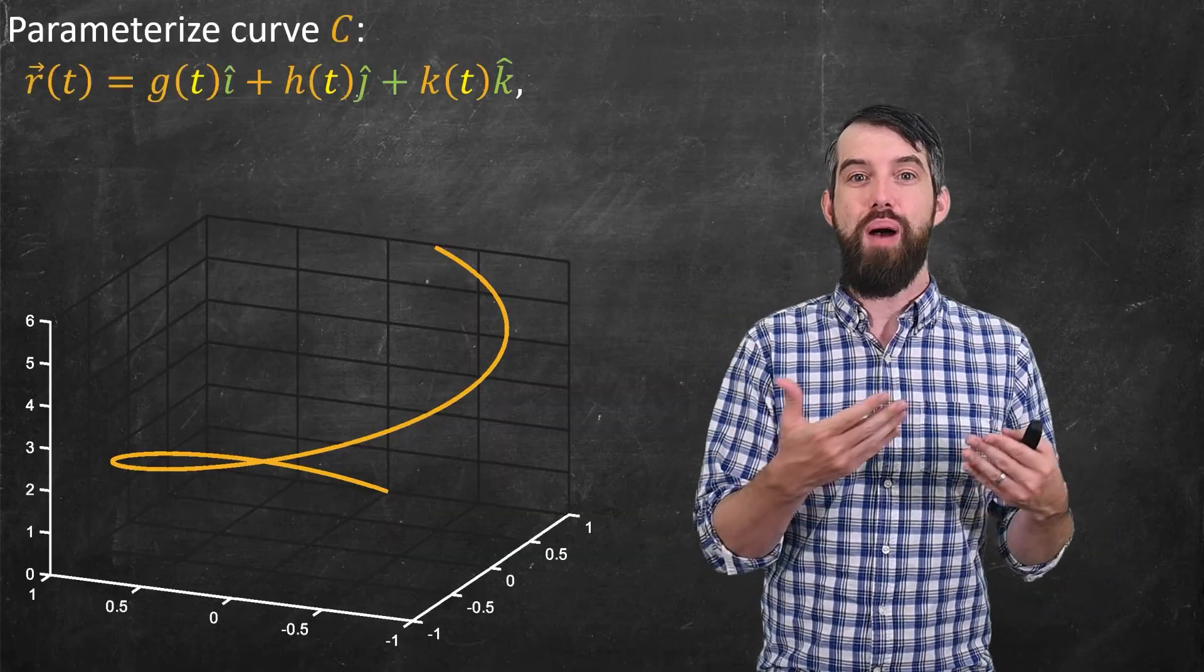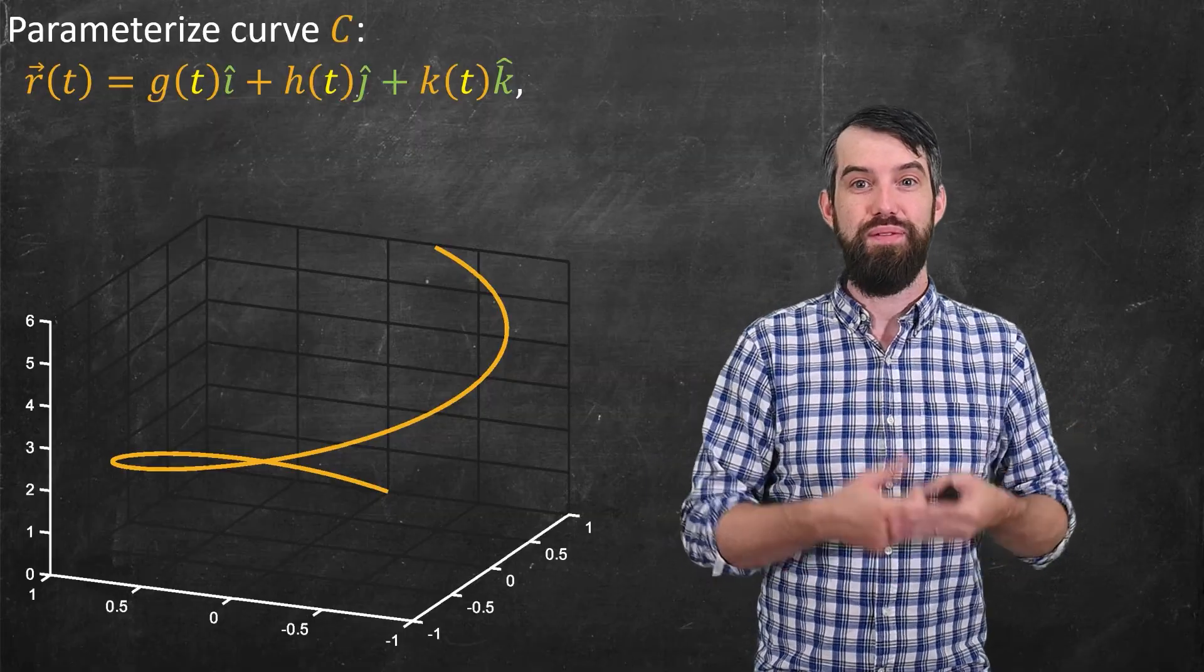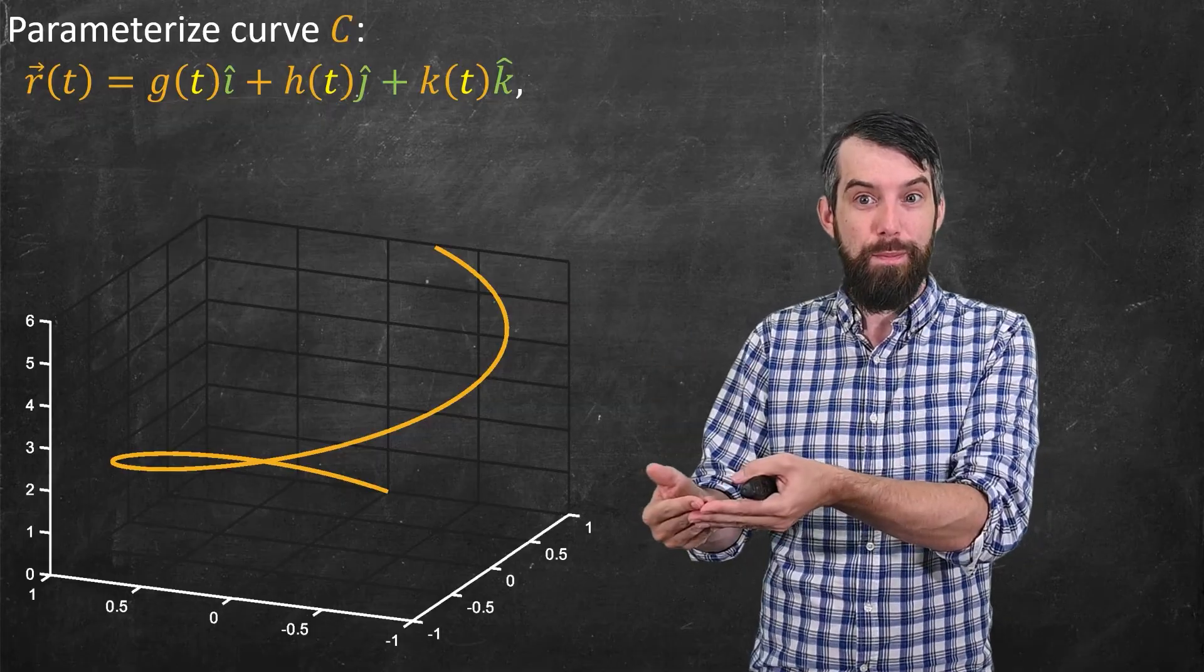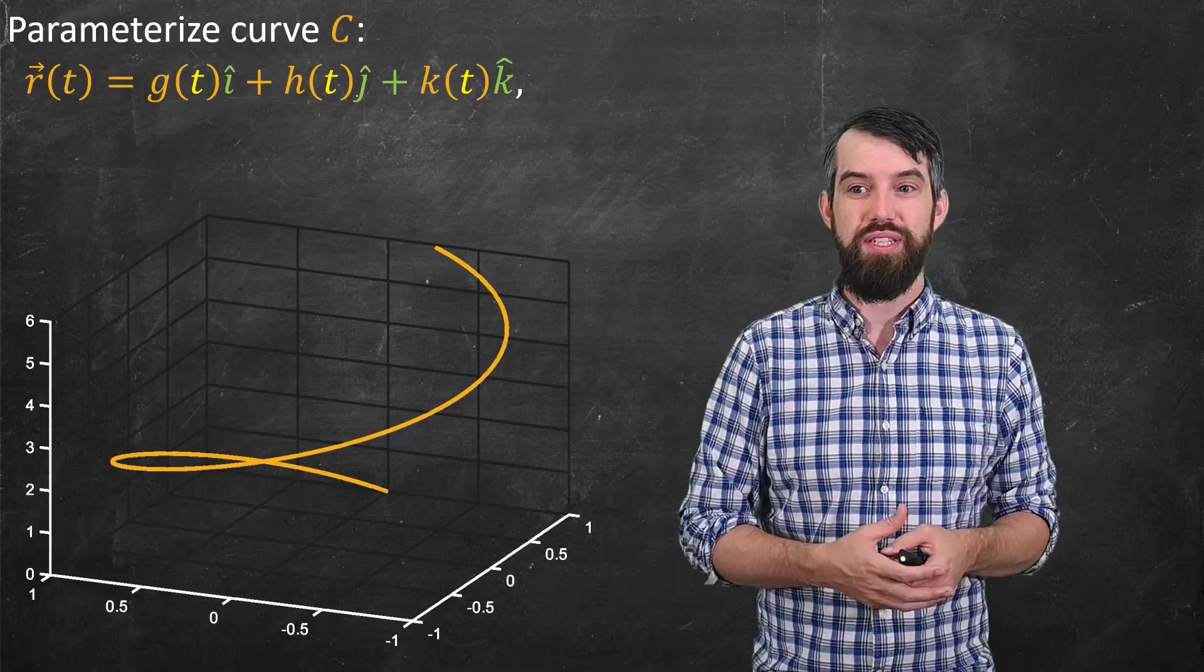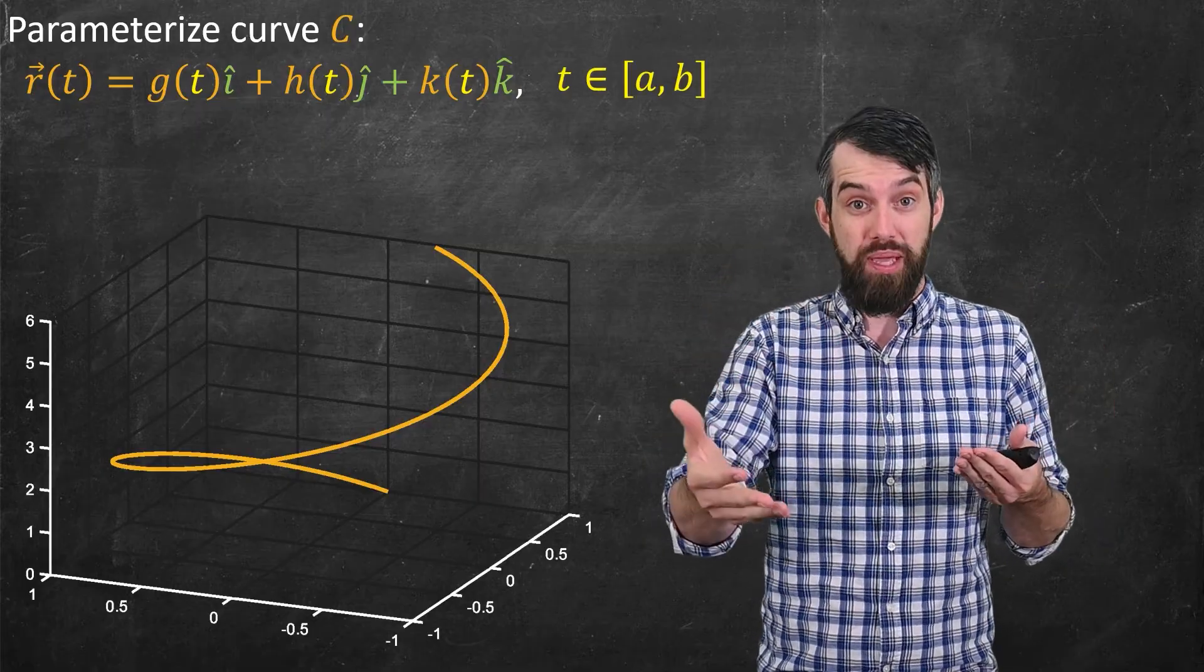So generically, my r(t) is going to be some function g(t) in the i-hat, some function h(t) in the j-hat, and some function k(t) in the k-hat. And a parameterization also has to come with some restriction on the t. In this case, a generic restriction t is on some interval a up to b.